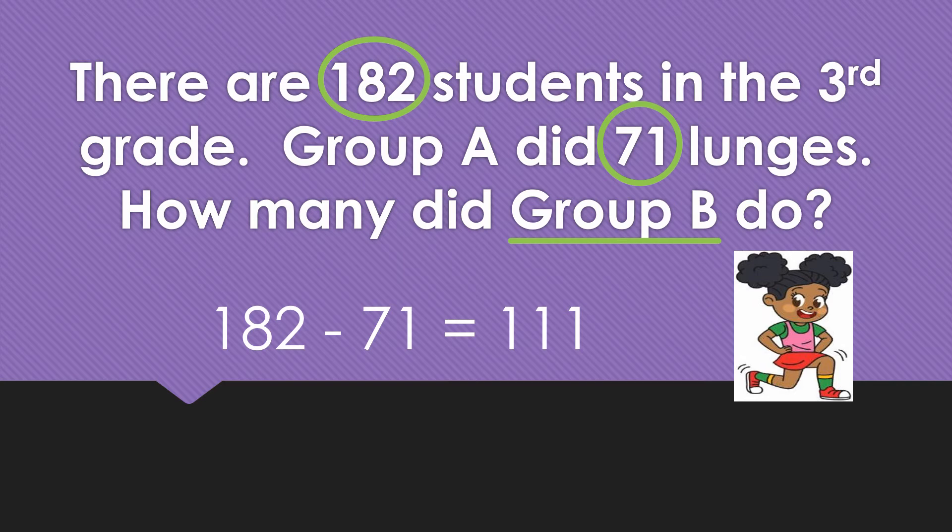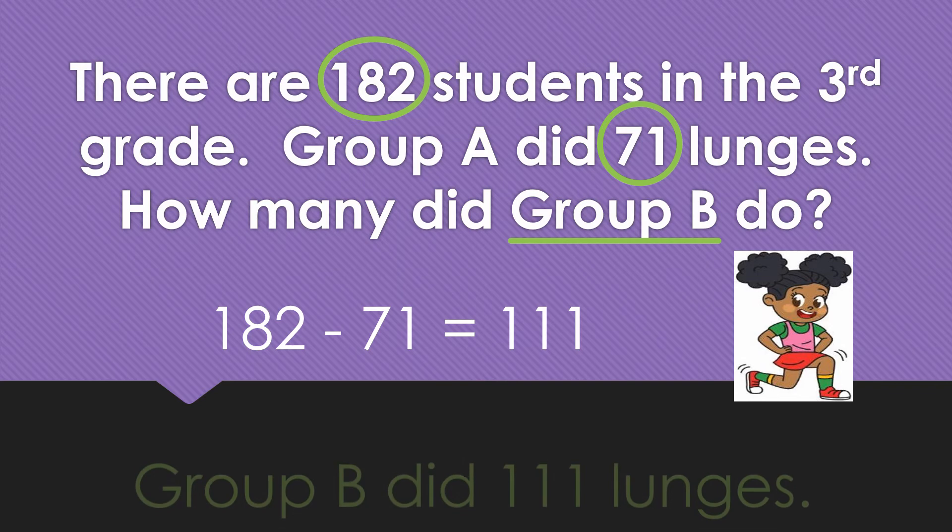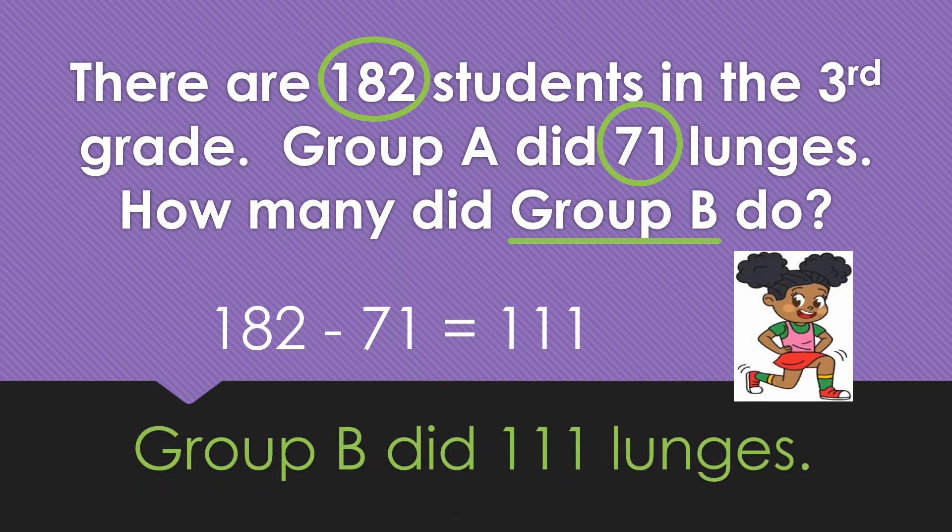182 minus 71 is 111. My solution sentence is: Group B did 111 lunges.